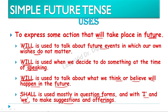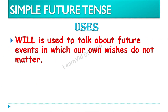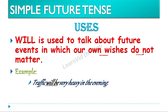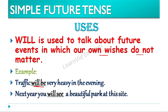Toh chaliye in sare uses ko hum one by one detail mein with examples study karte hain. The first use: will is used to talk about future events in which our own wishes do not matter. Example: Traffic will be heavy in the evening. Ab ye humare bas mein nahi hai ki traffic heavy hoga ki light hoga — humari wish matter nahi karti, tuh yahaan par will be ka use kar rahe hain. Another example: Next year you will see a beautiful park at this site — again our wish doesn't matter, so will ka use kiya hai.